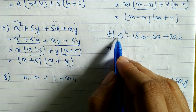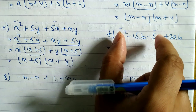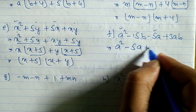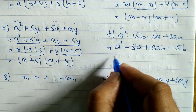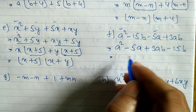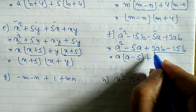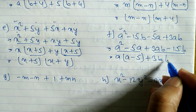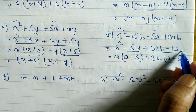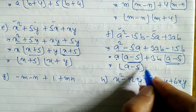Now look at question 4f. From a² minus 15b, we cannot take any common directly. So we rearrange: take first and third terms together, second and last together. Arrange as a² minus 5a plus 3ab minus 15b. From the first two terms, a is common, remaining a minus 5. From the last two terms, 3b is common — 3b and b common is b, remaining 3, and a is remaining, so 3b(a minus 5). Now a minus 5 appears in both, so we take a minus 5 as common, remaining a plus 3b. The answer is (a minus 5)(a plus 3b).